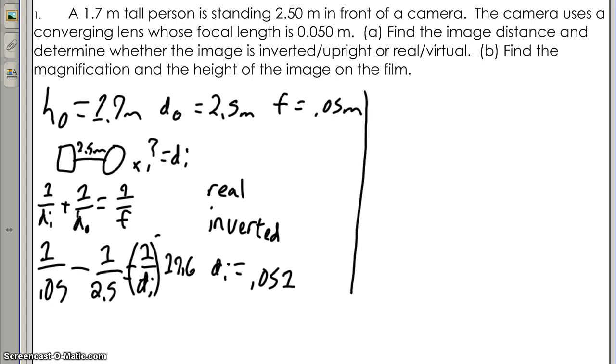Part B: You need your magnification, which you can find by solving m equals the height of the image over the height of the object, or it is also negative distance of the image over the distance of the object.